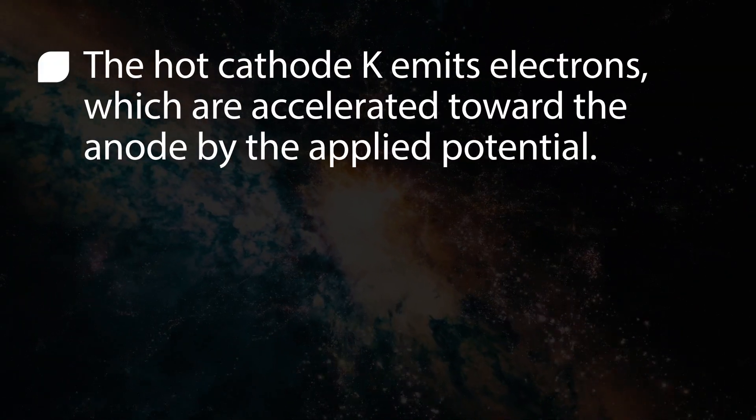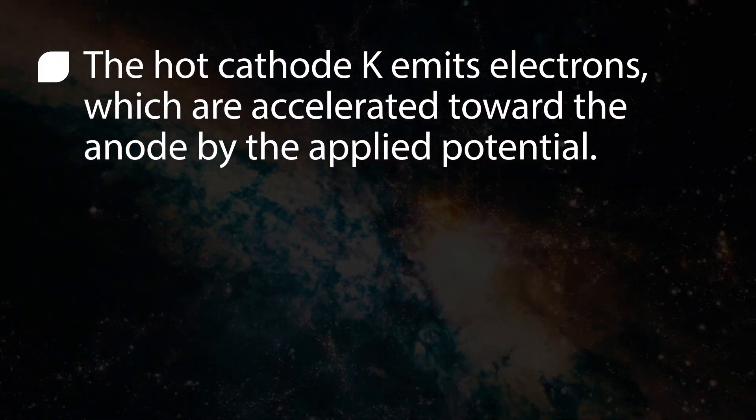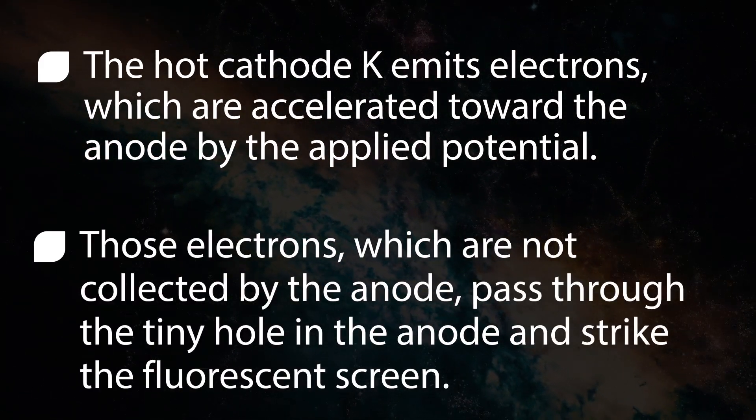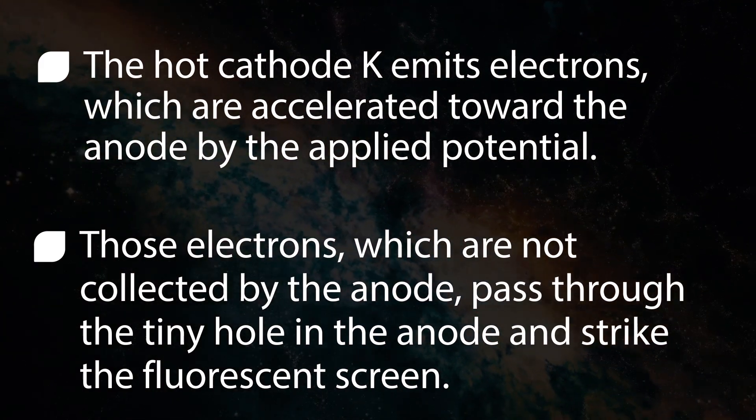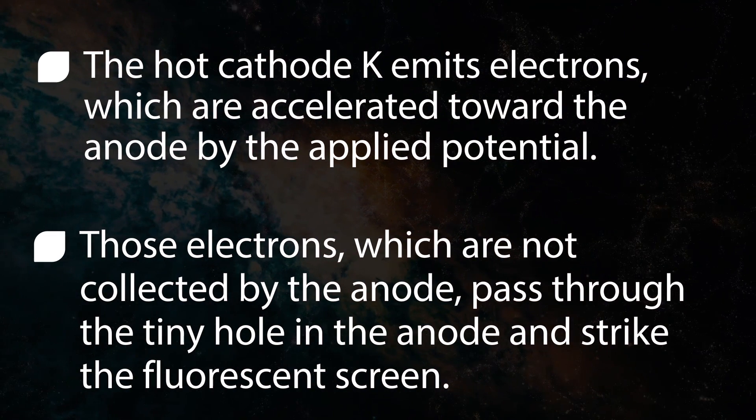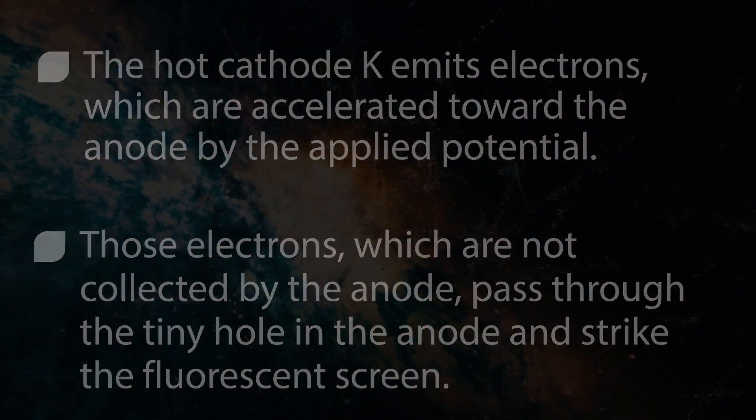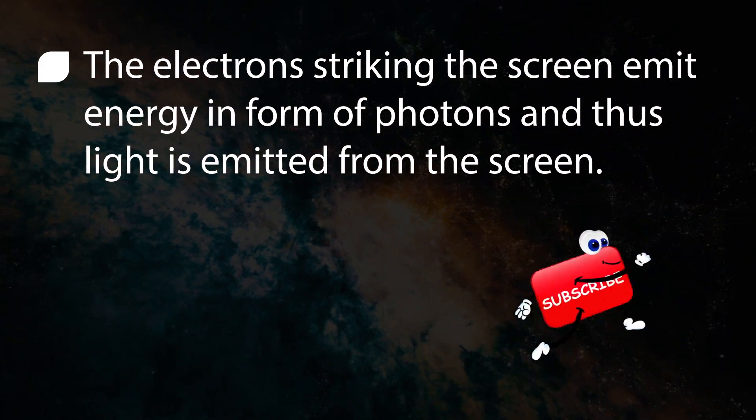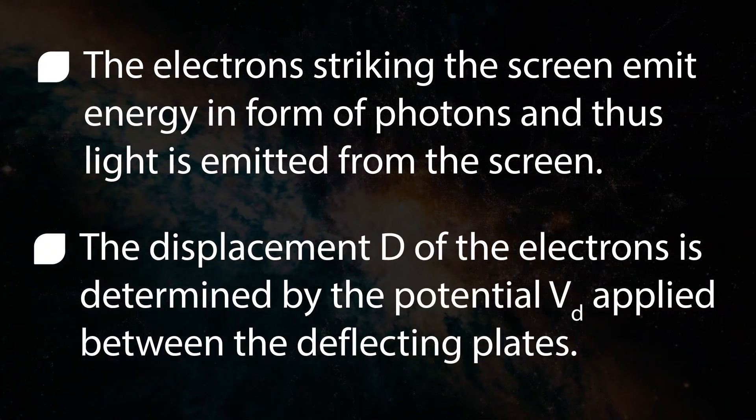The hot cathode K emits electrons which are accelerated towards the anode by the applied potential. Those electrons which are not collected by the anode pass through the tiny hole in the anode and strike the fluorescent screen. The electrons striking the screen emit energy in form of photons and thus light is emitted from the screen.